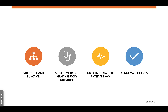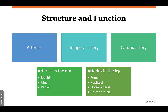The arteries that we're going to assess — the largest we see at the top is the temporal artery, the carotids, and then we want to palpate and assess each one of these arteries. For the arm, it's the brachial, ulnar, and radial. For the leg, it's femoral, popliteal, dorsalis pedis, and posterior tibial.